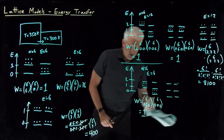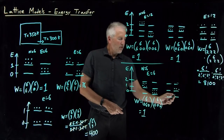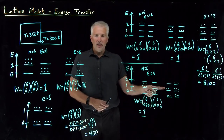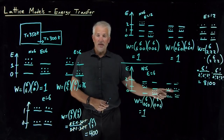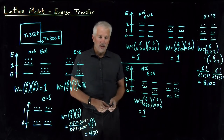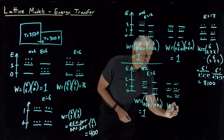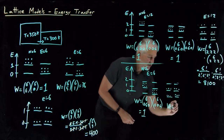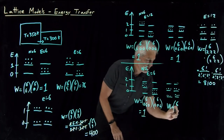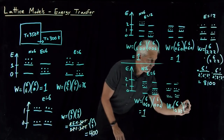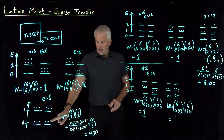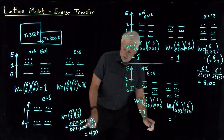Going back to our approach of lifting some molecules up and paying for those with others that fall down: a macrostate of three in the equals one state and three in the equals zero state on both sides spreads the energy out considerably more. It has the same amount of energy on the left and right. The multiplicity: six choose zero, three, three times six choose zero, three, three — that's the same as six choose three, which works out to 20 times 20 equals 400.